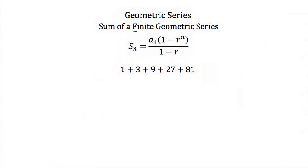If we have a finite geometric series, there's a final term and we can find the sum by adding all terms together. So 1 + 3 + 9 + 27 + 81 equals 4, then 13, then 40, then 121. But imagine if this series had 35 terms — you probably wouldn't want to add each term individually. Instead you can use a formula to find the sum of a finite geometric series.